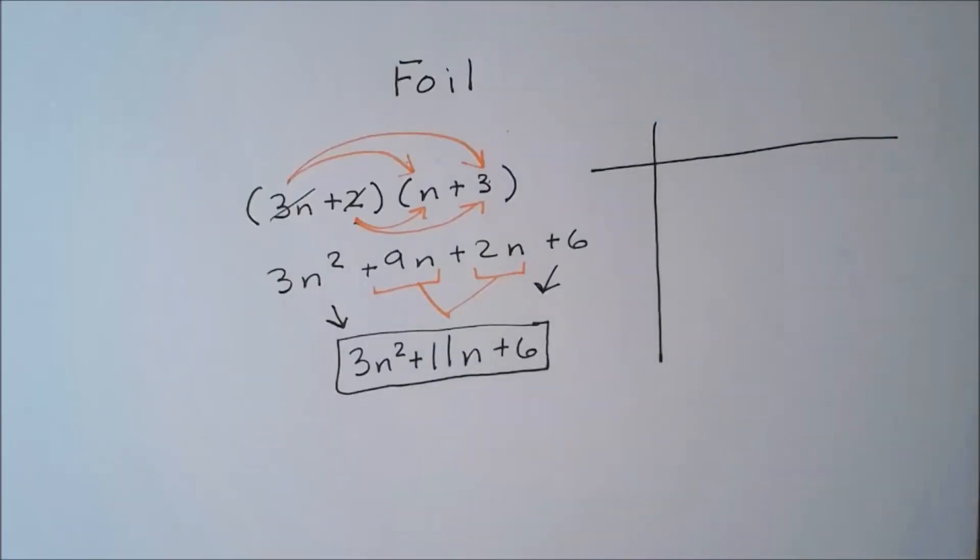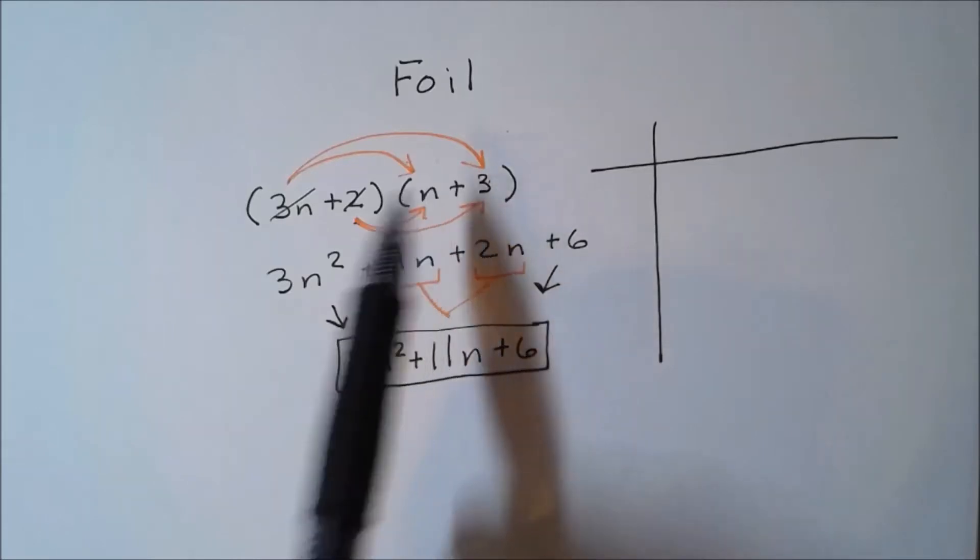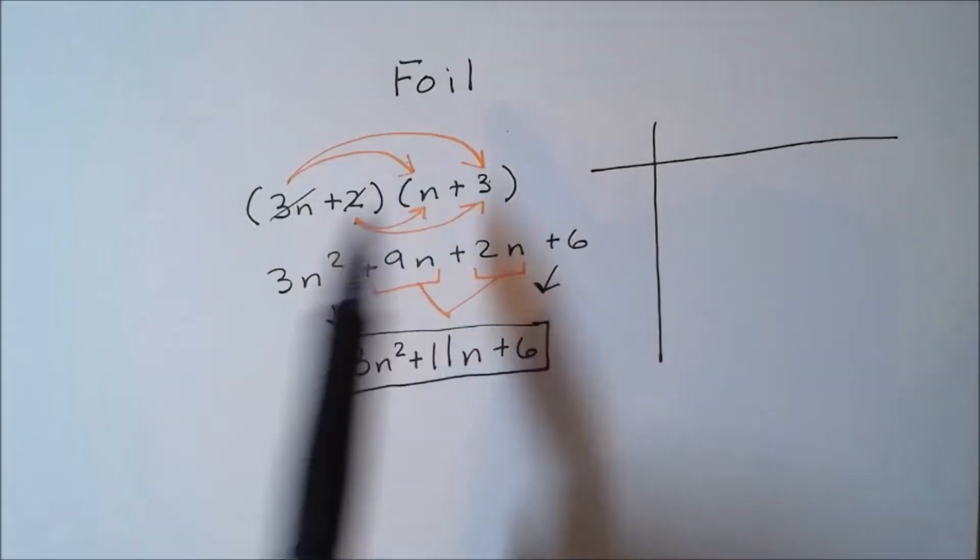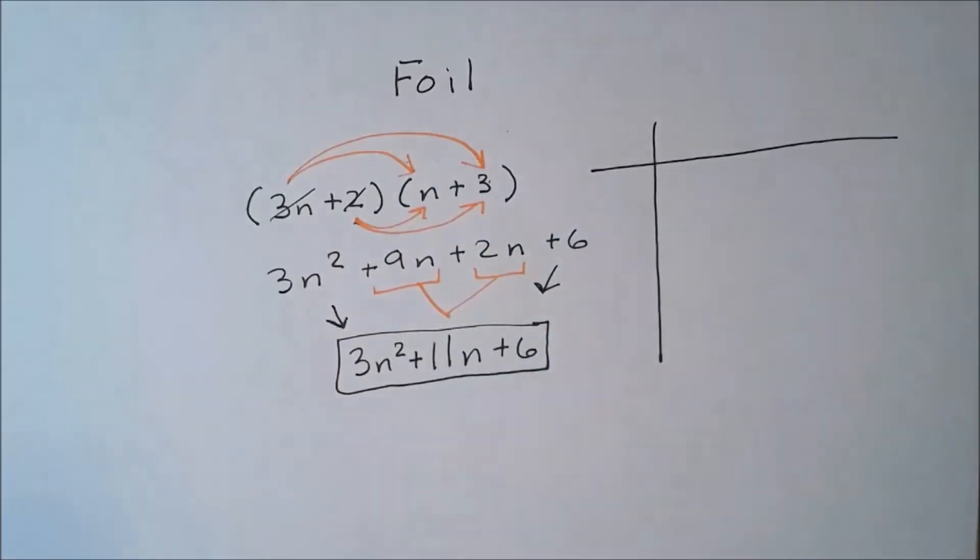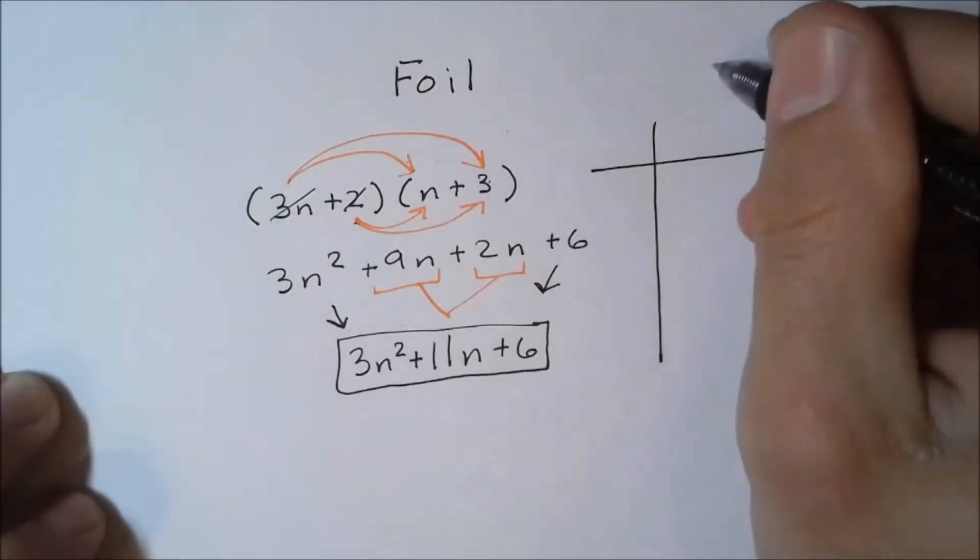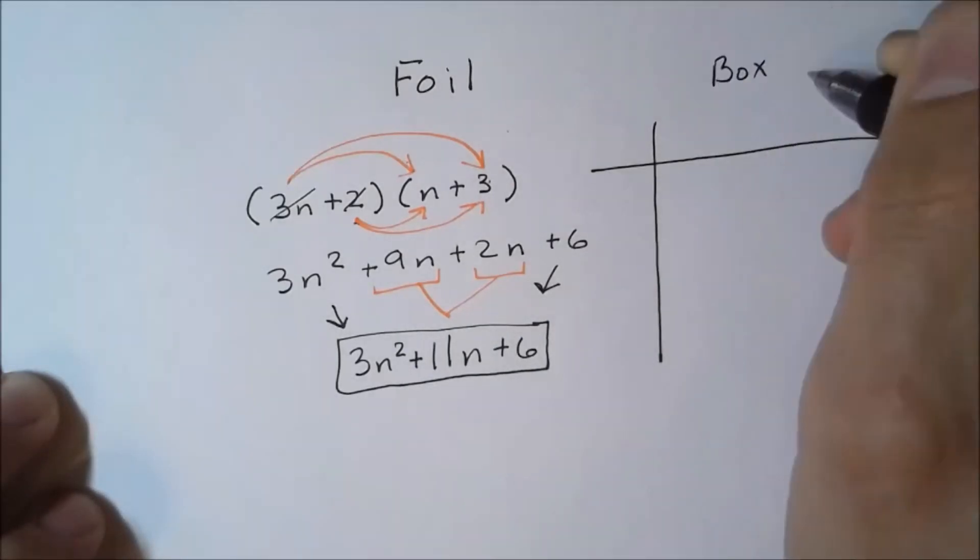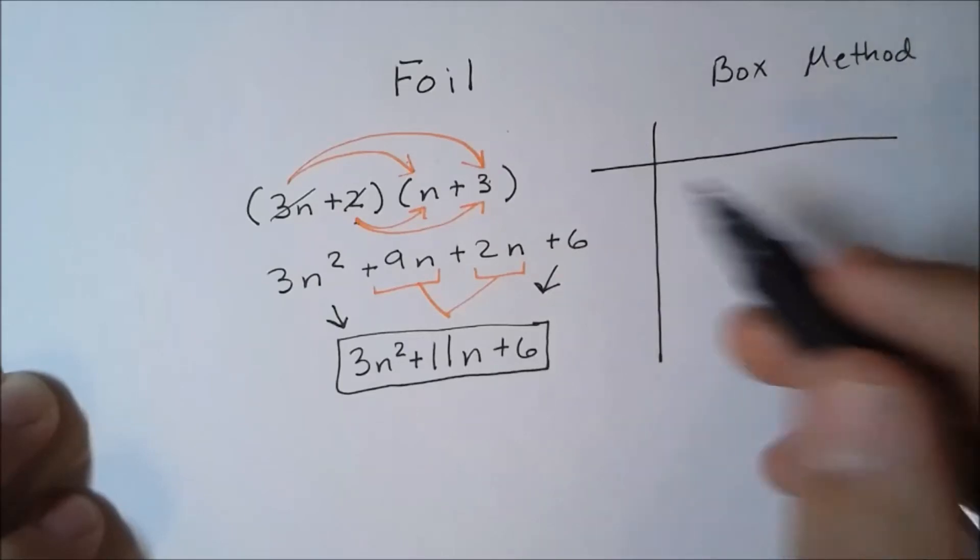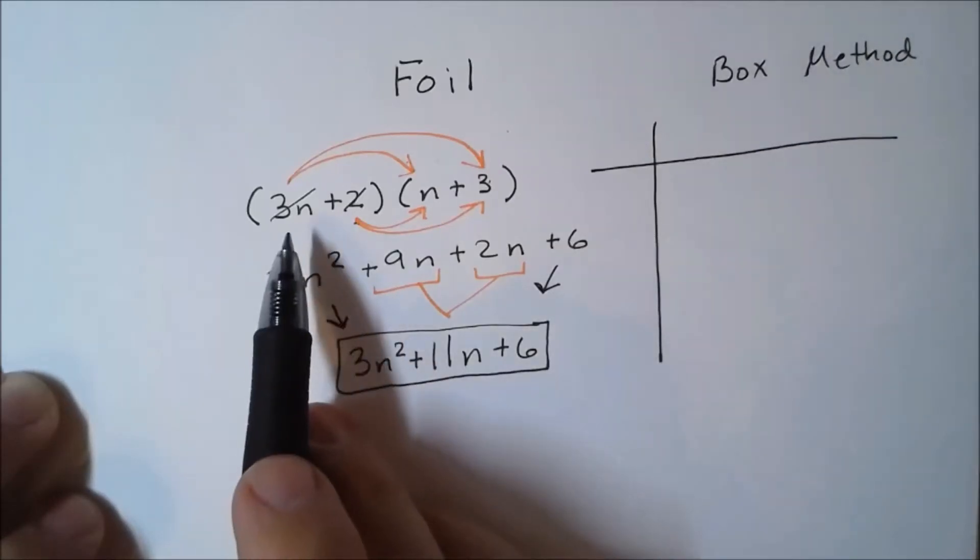Alright, now earlier we foiled these two binomials. We multiplied them together and got our answer. What we're going to do now is called the box method. If you like the box method better, you're welcome to use it.